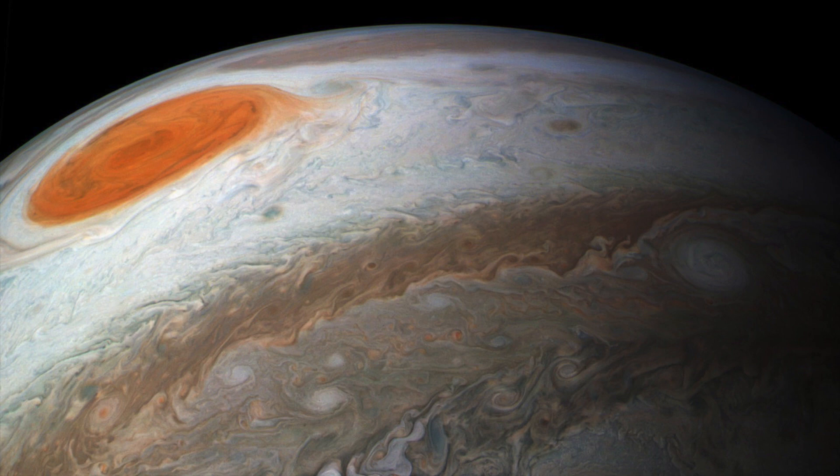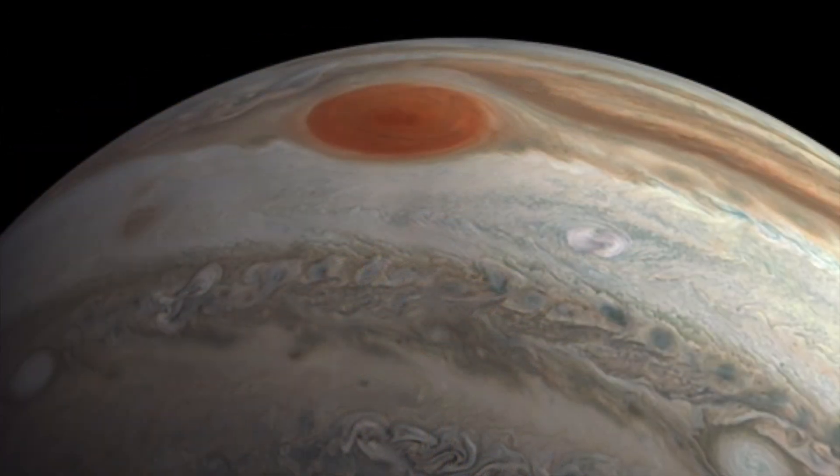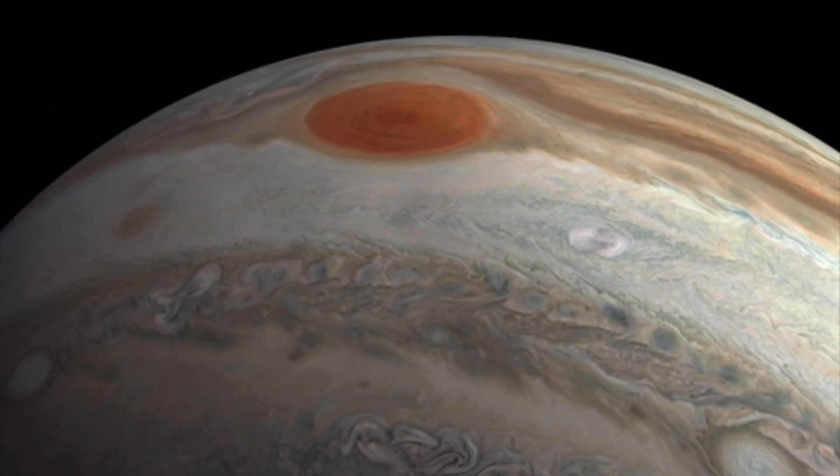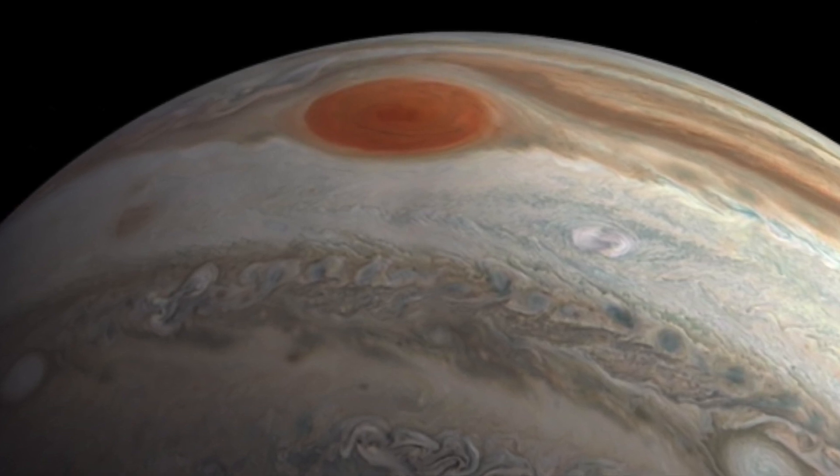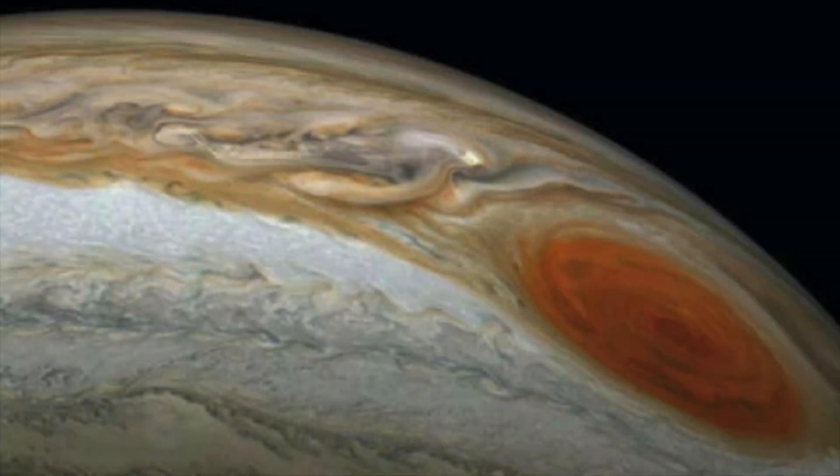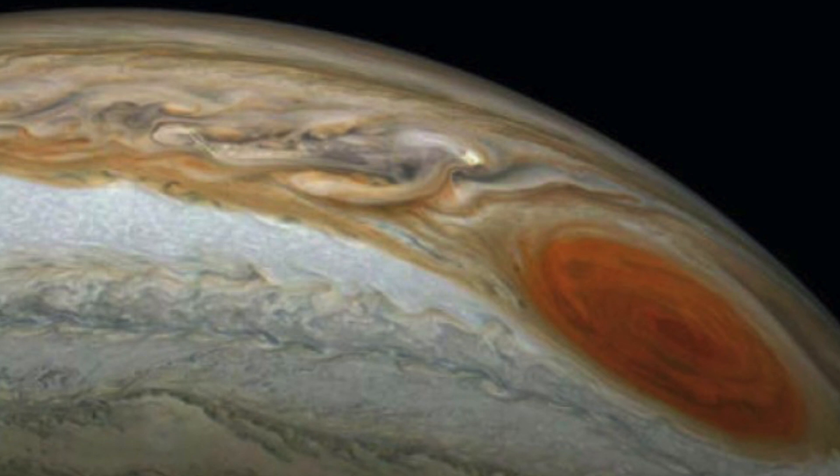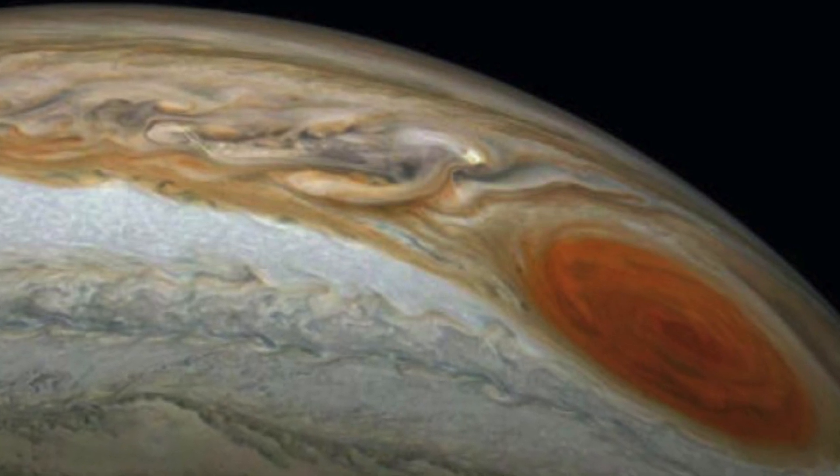Jupiter's Great Red Spot may survive by eating smaller storms. Jupiter's famous Great Red Spot is undoubtedly the storm to end all storms. A massive anticyclonic high pressure storm with swirling winds that rage at speeds over 400 km per hour, it holds the title of the largest storm so far discovered in the solar system. And recently, scientists realized that the key to its size may be none other than storm cannibalism of sorts.